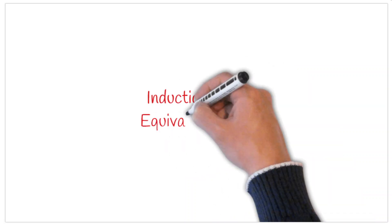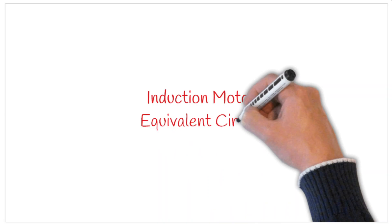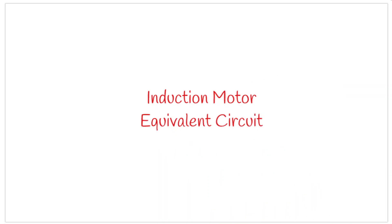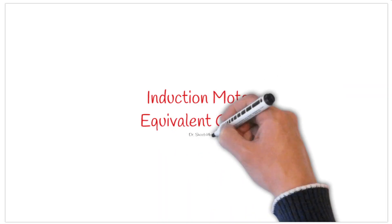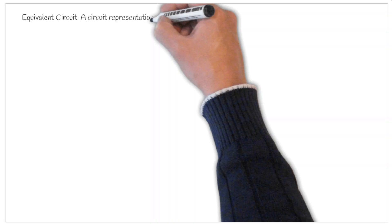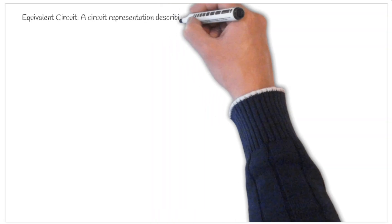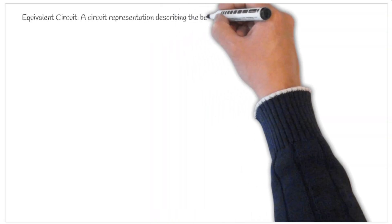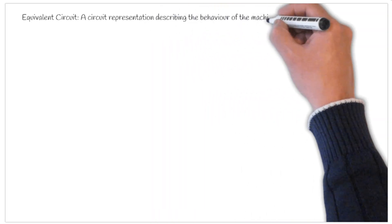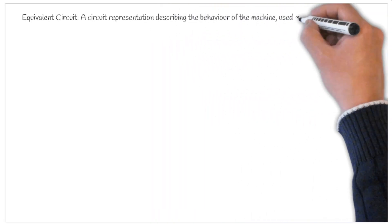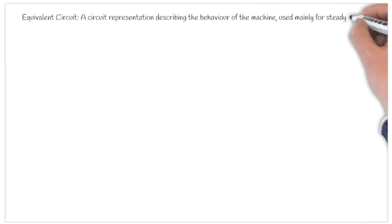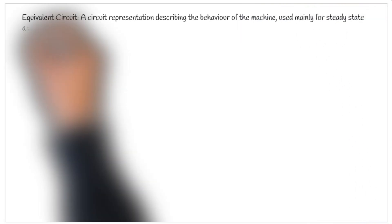In this session we will understand the equivalent circuit of induction motor — the derivation of an equivalent circuit and the understanding of equivalent circuit. An equivalent circuit is a circuit that represents the physical behavior of the system or of any machine. It will help us understand the steady state properties of the system.